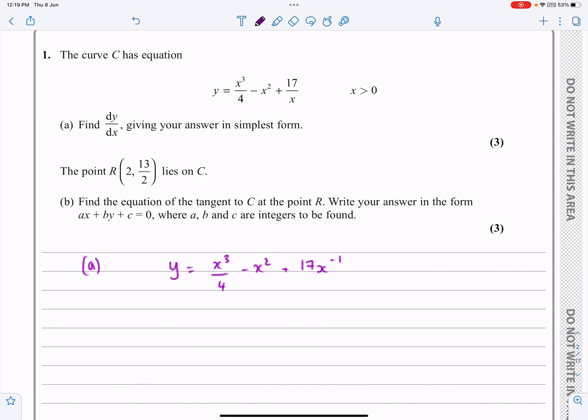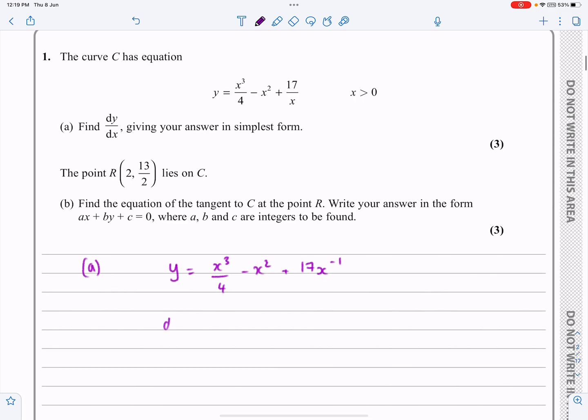dy/dx - when we're differentiating, multiply by the power, take 1 off the power. So I'm going to get 3x²/4. Same thing, multiply by the power, take 1 off the power is going to give me that.